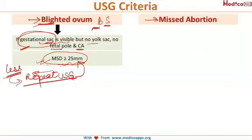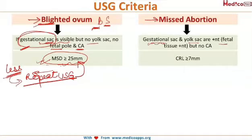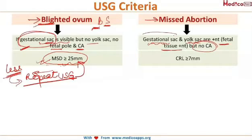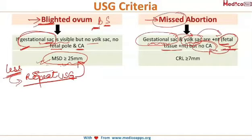Coming to the missed abortion — this is a separate entity in which the gestational sac, the yolk sac, and some amount of fetal tissue are present, but there is no cardiac activity. This is the order in which structures appear: first the gestational sac, then the yolk sac, then the fetal tissue, and finally cardiac activity. In missed abortion, structures are present up to fetal tissue.